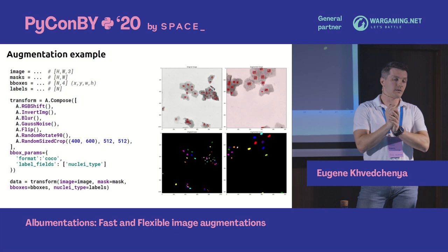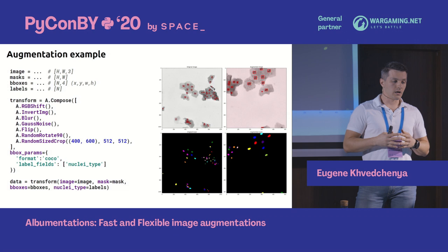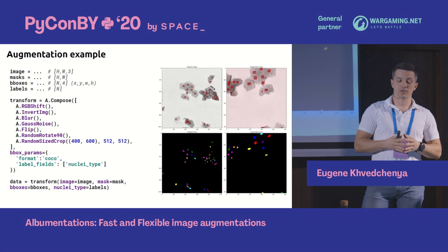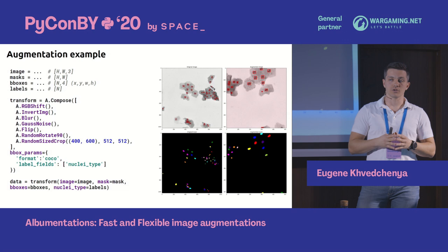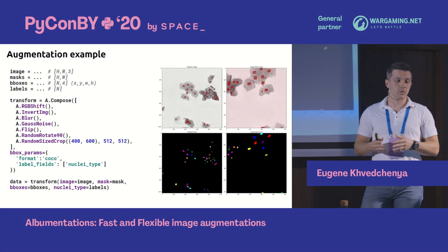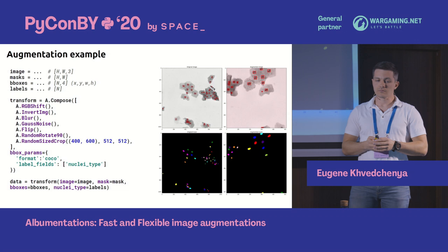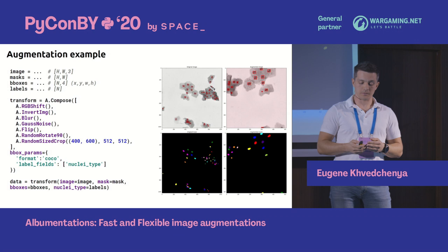Another good example is from the Data Science Bowl 2018, where participants had to detect individual nuclei in microscopy images. The augmentation set from the winning solution used different combinations of random crops, noise, and RGB color shift. By having this set of transformations they were able to outperform other competitors and win a significant prize. The bottom line is that even a small set of augmentations can give a significant boost in model accuracy.